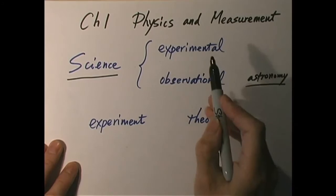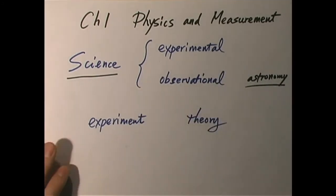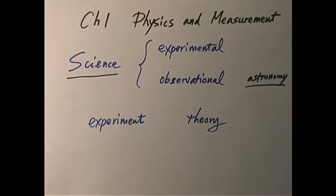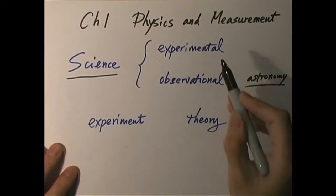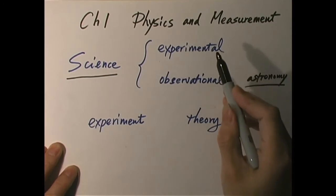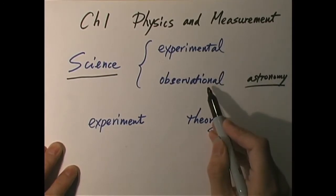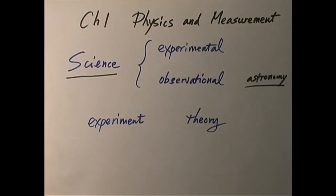Physics is what's called an experimental science. The laws of the physical world are ultimately obtained by doing experiments. What is the difference between an experiment and a mere observation? Well, in an experiment, we have certain control over what's going on.